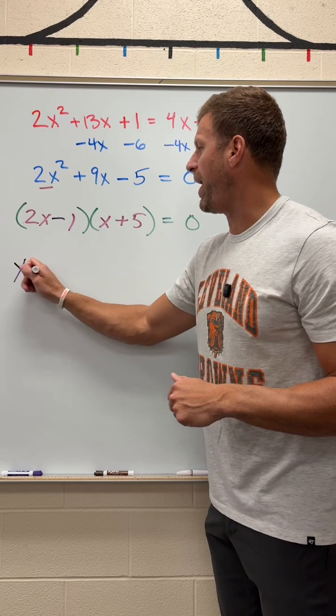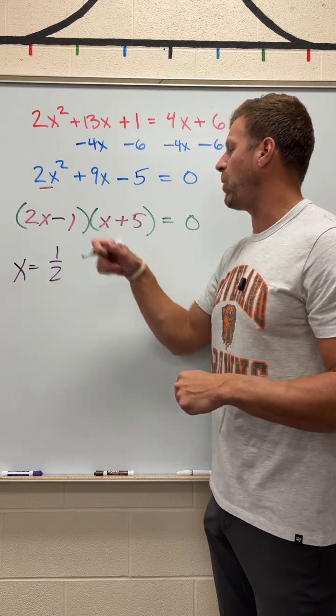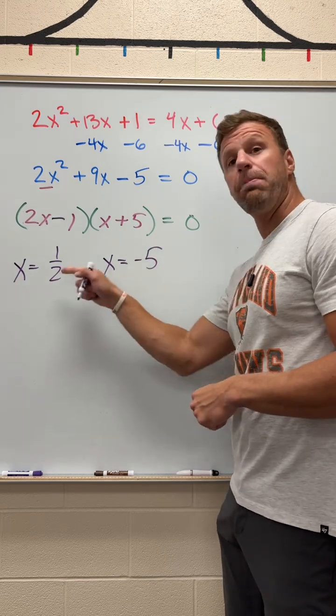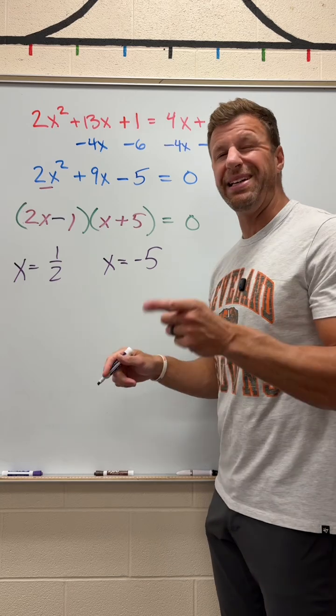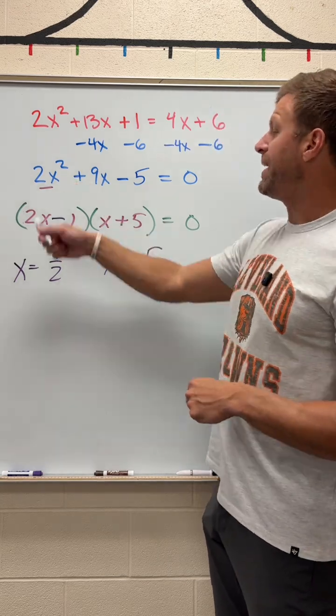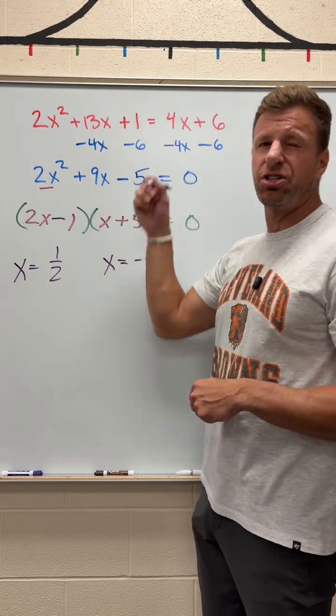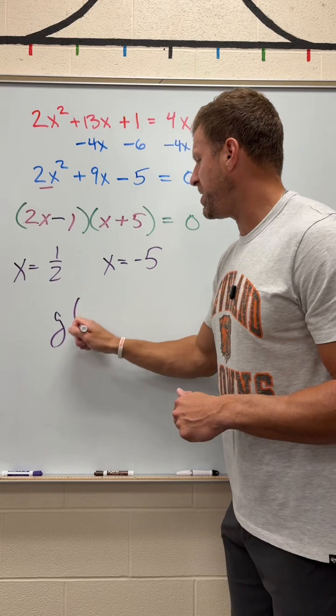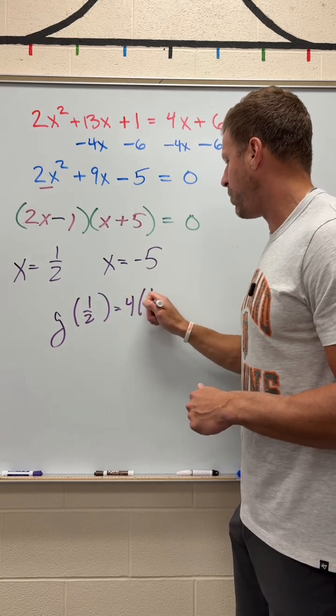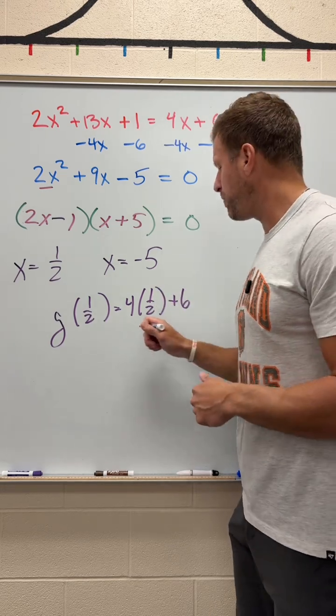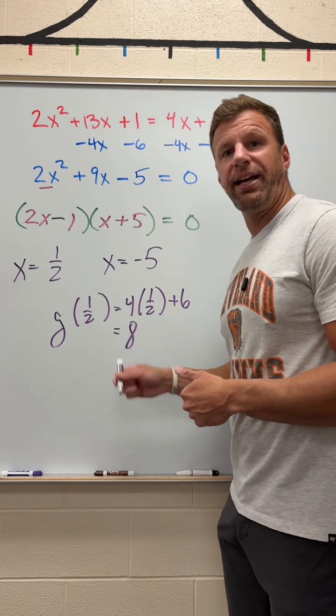This means I have two solutions for x. x equals 1 half, and x equals negative 5. Now, I do see both of those solutions among my choices, but now I've got to check that y coordinate. Now, you could plug the x's back into either f or g. A lot easier to use g. So, I'm going to use g. I'm going to plug 1 half in, so I get 4 times 1 half plus 6. 4 times 1 half is 2. 2 plus 6 is 8. So, there's the correct answer, 1 half comma 8.